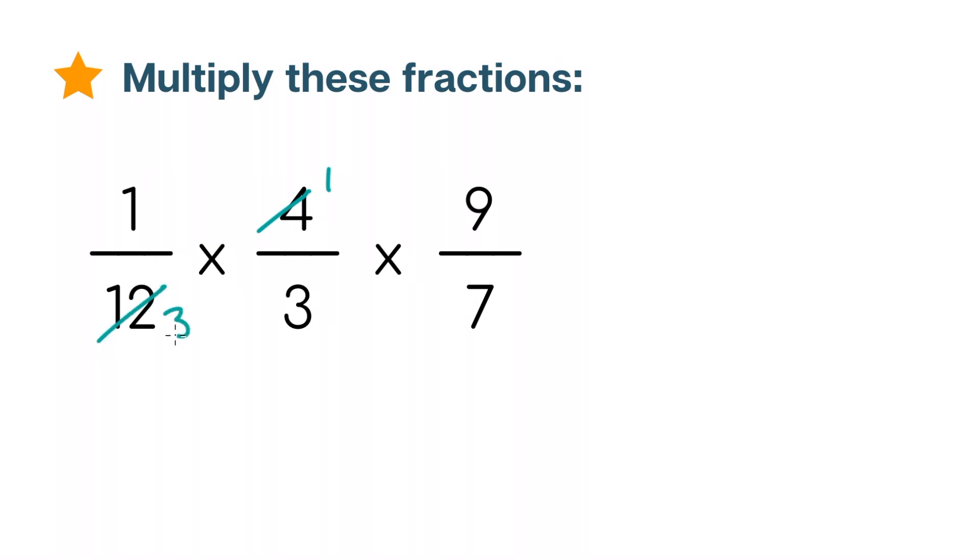Now, you'll also notice something else, that the numerator 9 is divisible by 3 and the denominator 3 is also divisible by 3. And yes, we can use cross-cancellation more than once in the same problem, so let's simplify even further.